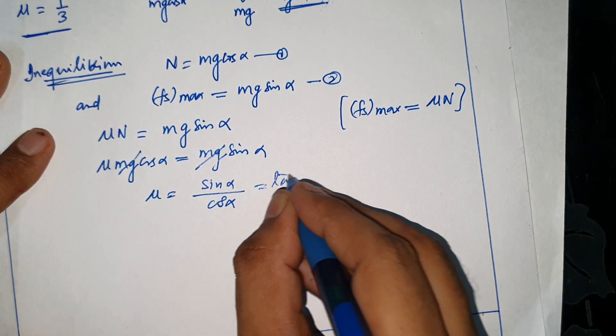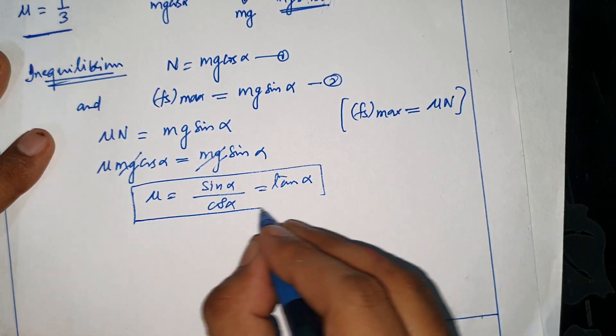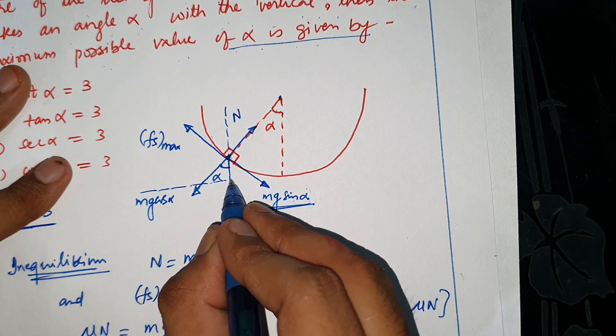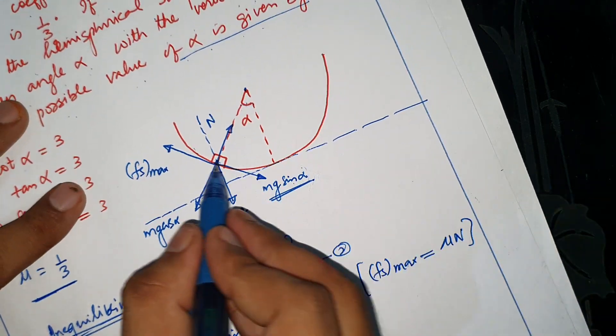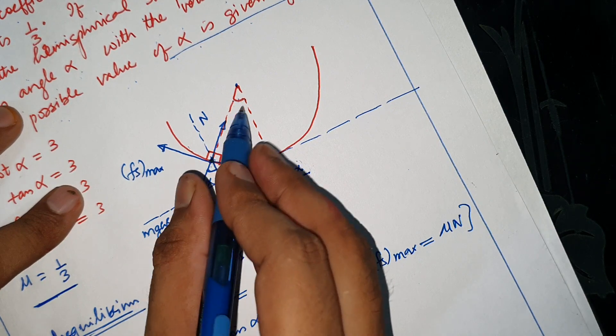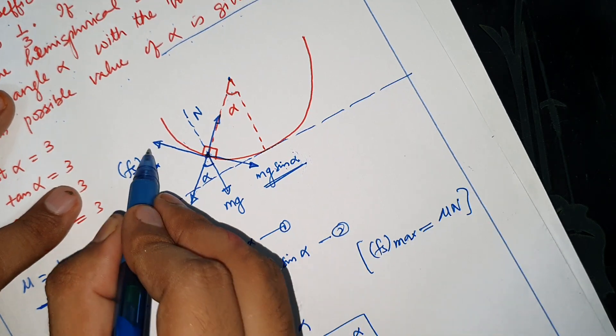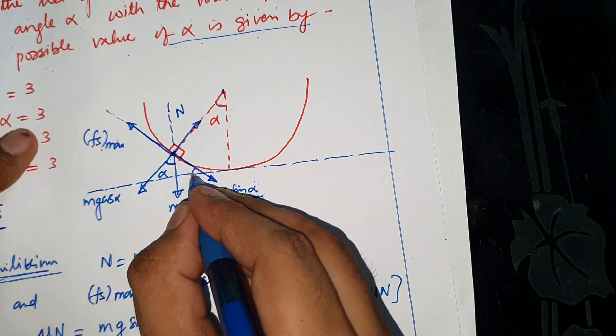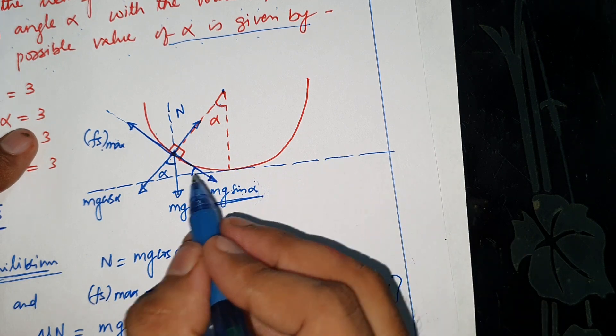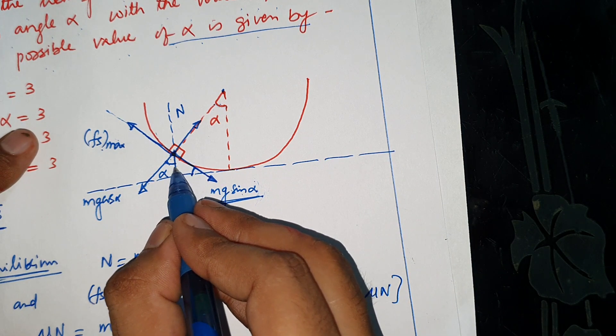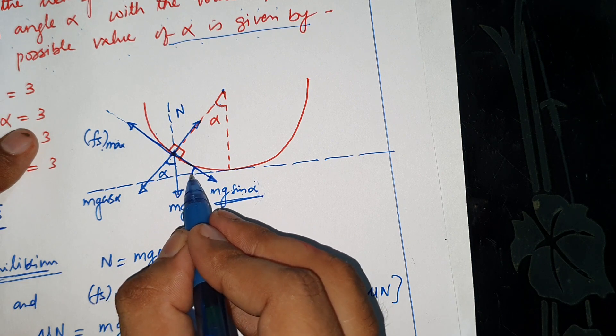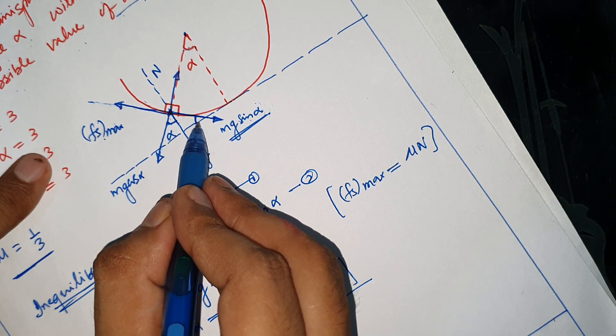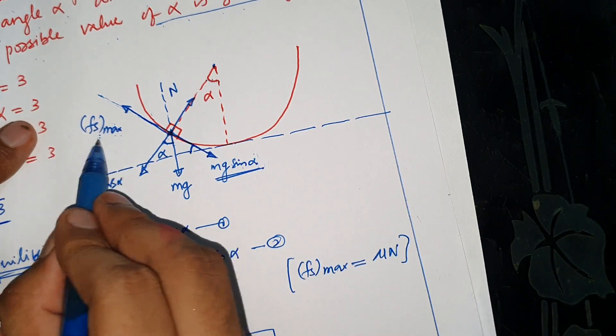So if we write here, alpha is the angle of repose. If we write a surface and this point is where mg sin alpha and fs maximum balance, this angle is also alpha because this is alpha, this is 90 minus alpha, and this is 90 minus alpha, and this is alpha. Then this is angle of inclination.